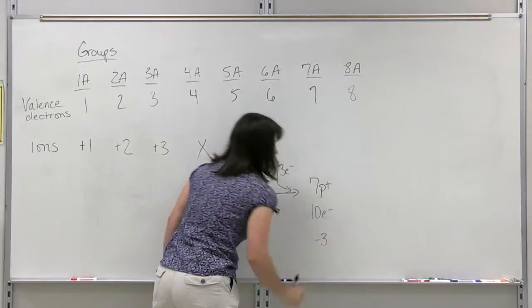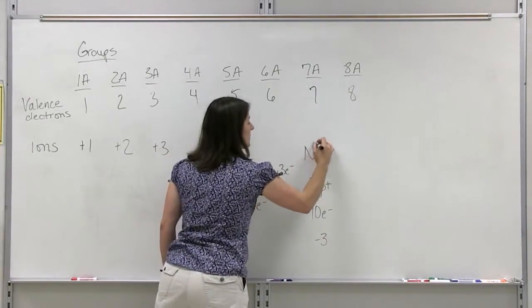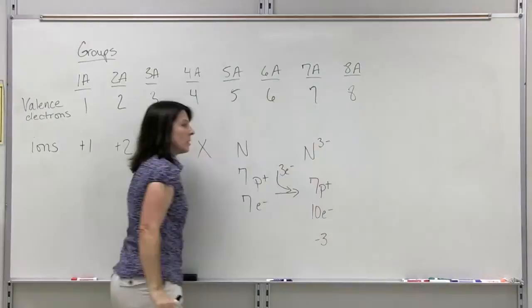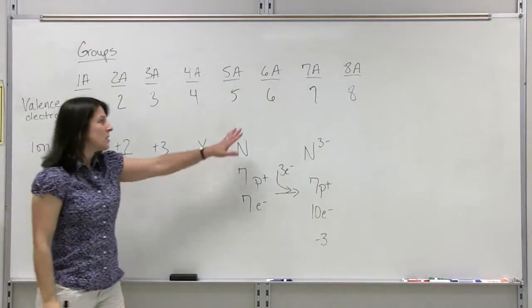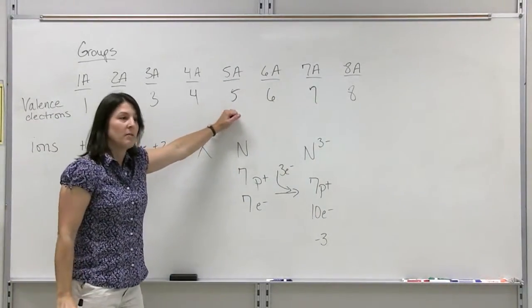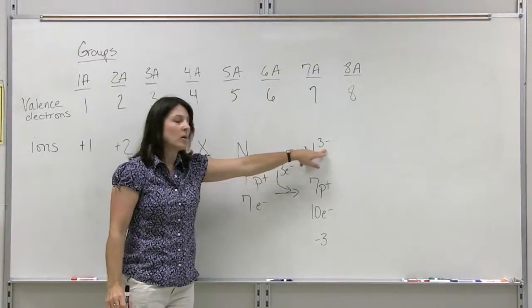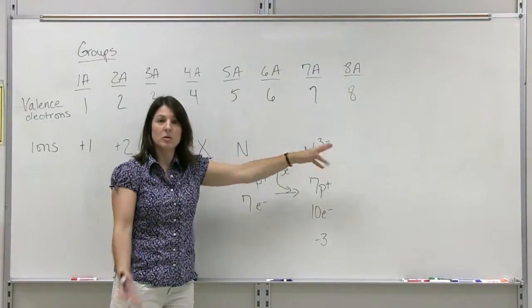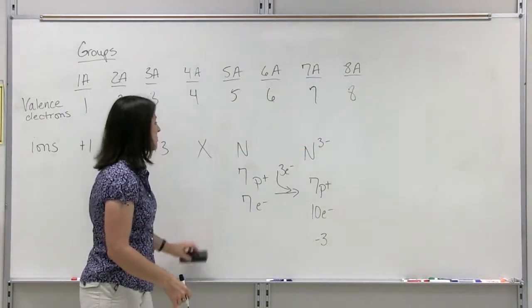We have a negative three charge, and you'd write the symbol like this. So the nonmetals that are in group 5A are all going to do the same thing and are all going to have a negative three charge because they're going to gain three electrons.